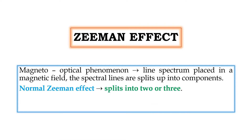We can classify the Zeeman effect into two forms: normal Zeeman effect and anomalous Zeeman effect. The normal Zeeman effect is the splitting of spectral lines into two or three components. It can be easily explained quantitatively by using classical theory.